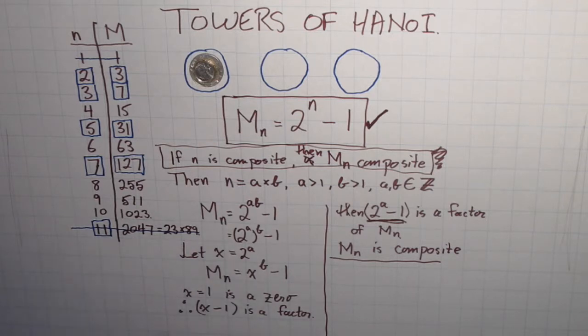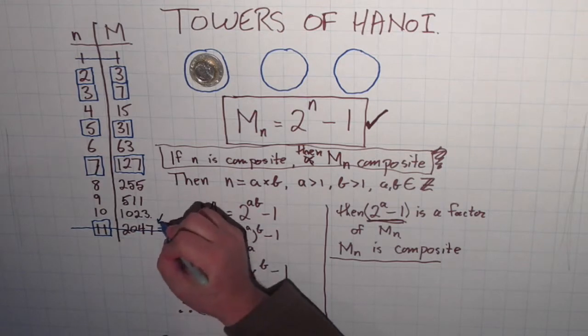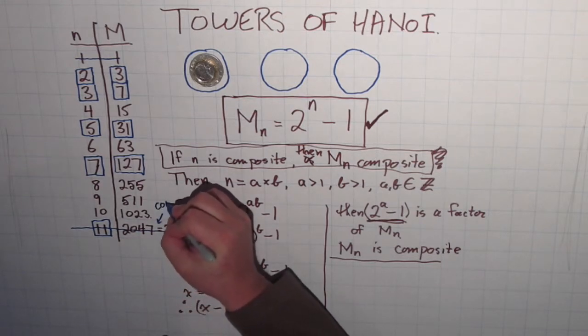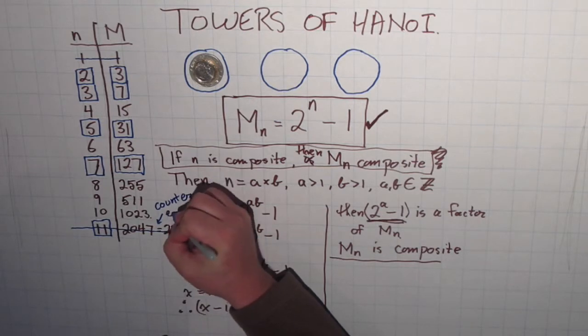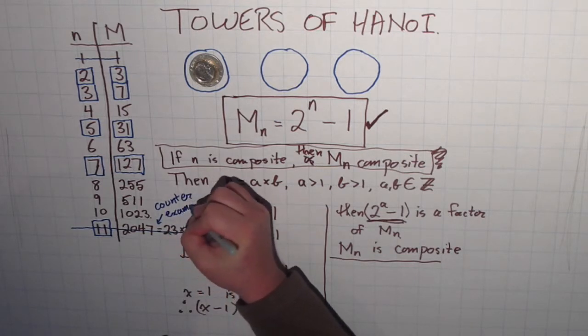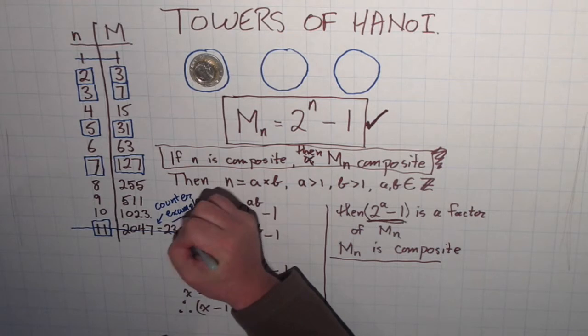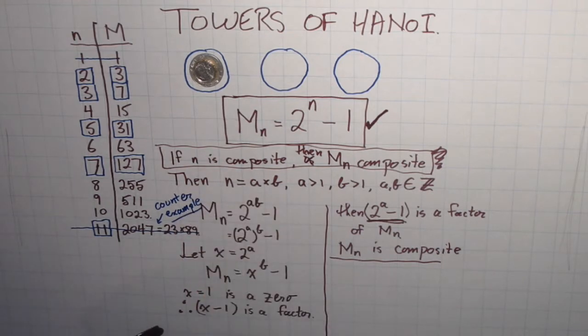It's interesting how to prove something works all the time for all values of n—that can be a tough problem to solve. But to prove that something doesn't work requires only the discovery of what we call a counterexample. If you can find one counterexample, well then you know the statement is false. And here we found ourselves a counterexample. It turns out that when n is prime, there's no guarantee that M_n will be prime.